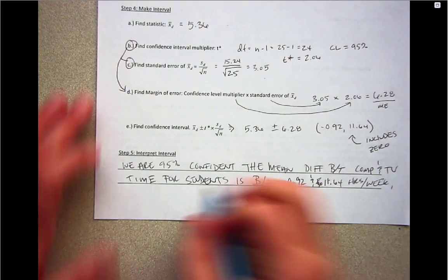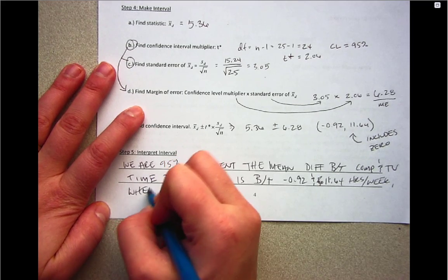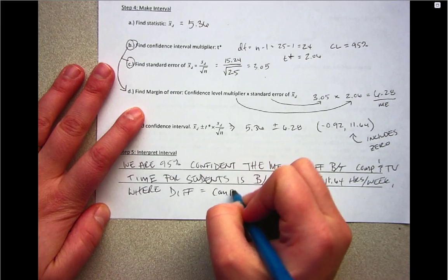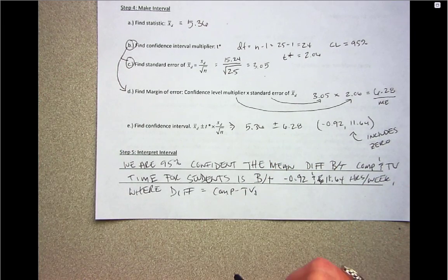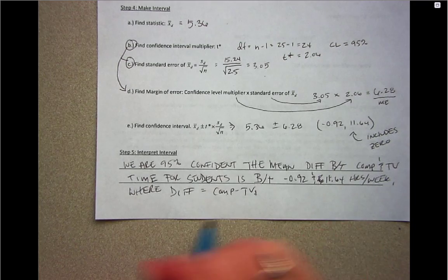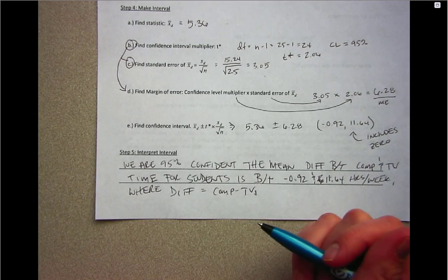We're going to include how the differences were found. Here, differences equal computer minus TV. That's important because it tells people the direction of subtraction and helps them determine which of the two variables was greater.